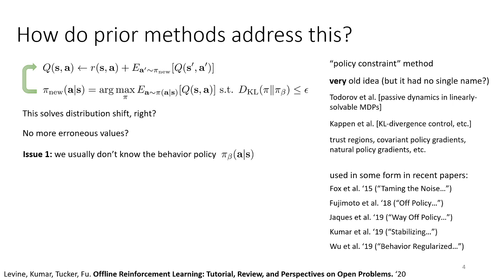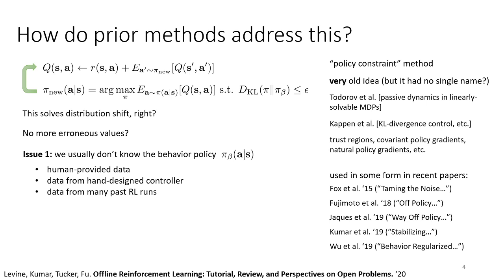Policy constraint methods have a number of issues if applied naively. One obvious issue is that we usually don't know what the behavior policy is, which means we have to be very careful when estimating the KL divergence term. The data could have come from humans, a hand-designed controller, many past RL runs, or a mixture policy. In practice, we either need to fit another model with behavioral cloning to estimate pi_beta, or be clever so we can get away with only samples from pi_beta. The latter tends to work a lot better.